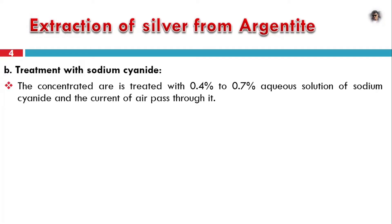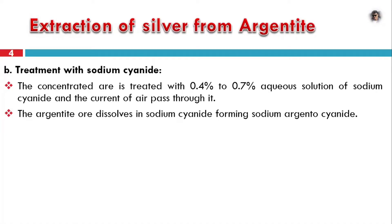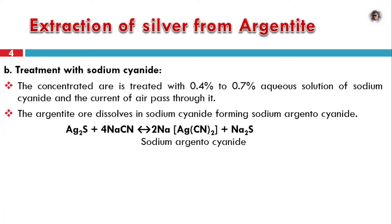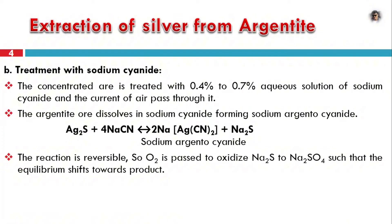We get a 0.4 to 0.7% concentration by aqueous solution of sodium cyanide, by passing a current of air. Argentite is dissolved in sodium cyanide; sodium argentocyanide is a soluble complex. Ag2S reacts with NaCN in aqueous solution to form a complex. This is a reversible reaction.